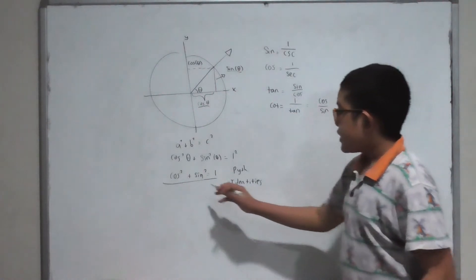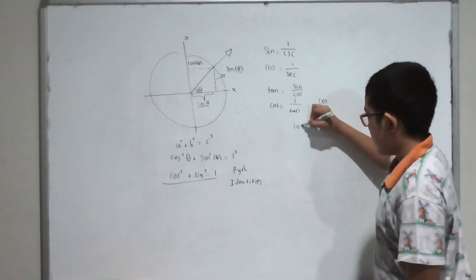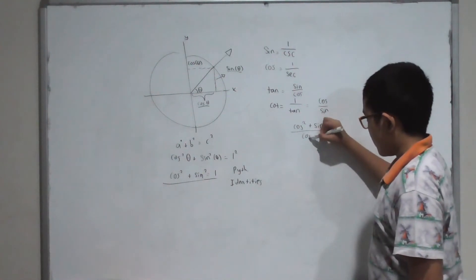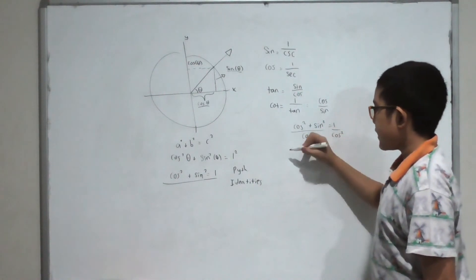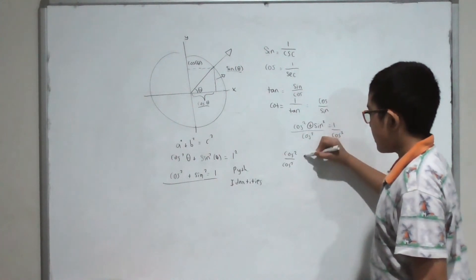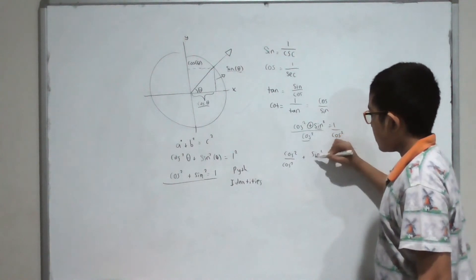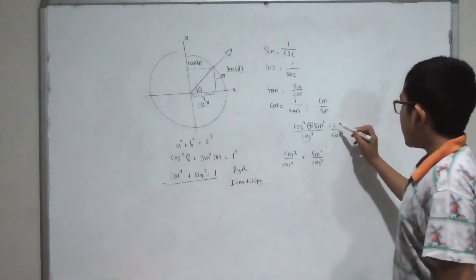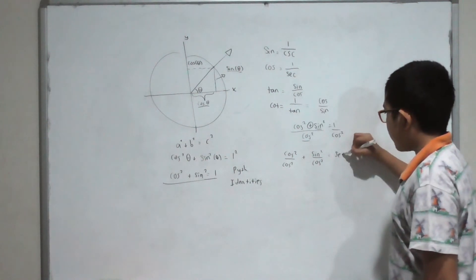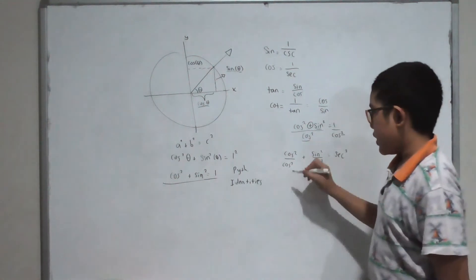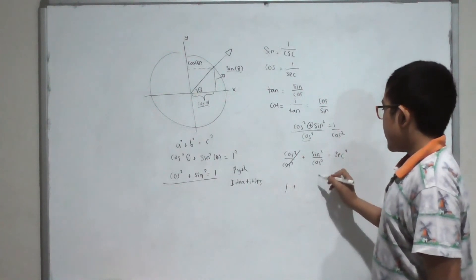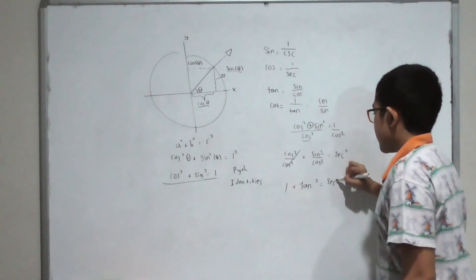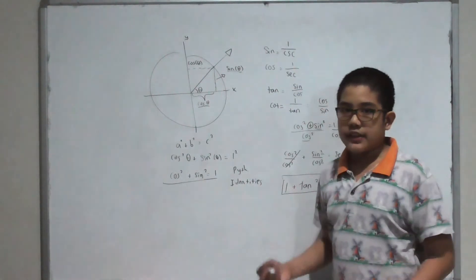Let's rewrite cosine squared plus sine squared equals one and divide both sides by cosine squared. The left side becomes cosine squared over cosine squared plus sine squared over cosine squared. Cosine squared over cosine squared simplifies to one, and one over cosine is secant, so one over cosine squared is secant squared. Sine squared over cosine squared is tangent squared. So we get: one plus tangent squared equals secant squared.